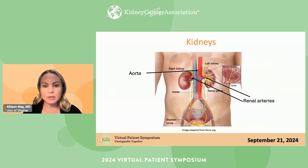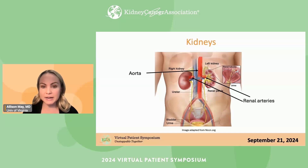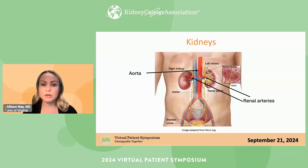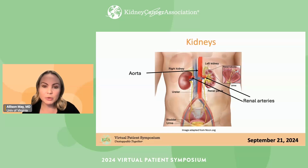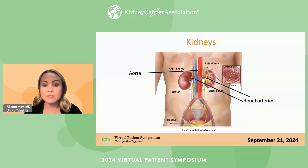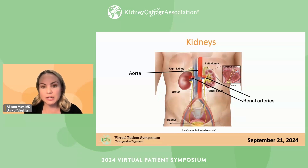It helps to understand how the kidneys work by understanding a little bit about the anatomy. Highlighted here in red, you can see the large blood vessel called the aorta — that's the blood vessel that comes off your heart and gives off all the smaller blood vessels to your body. You can see that each kidney has one main artery going to it, though some patients may have two or three. This brings the unfiltered blood into the kidney.